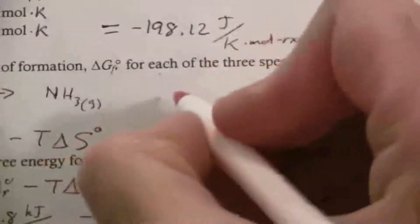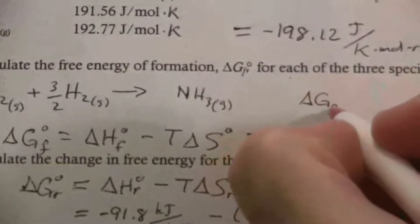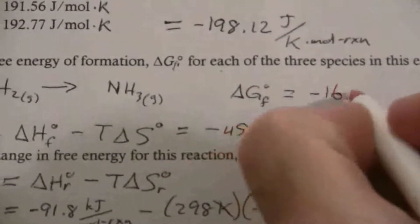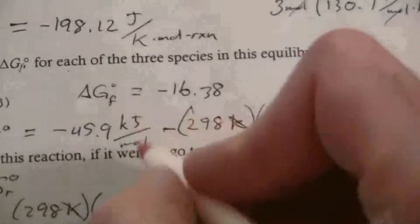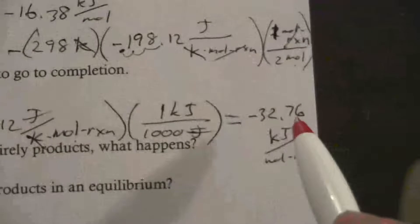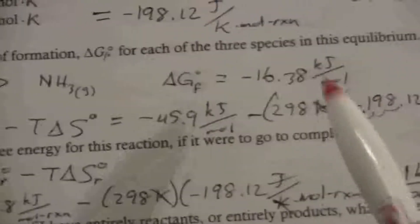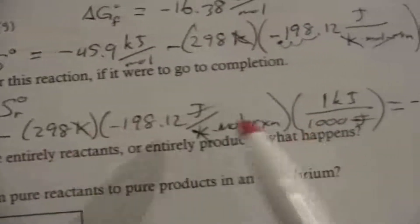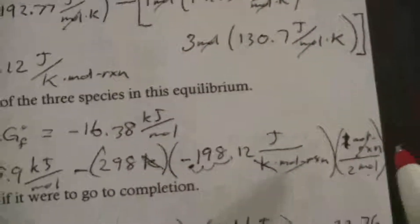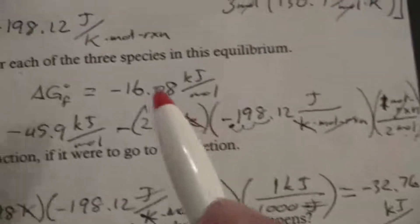So my delta G of formation for ammonia is negative 16.38, and that'll be kilojoules per mole of ammonia. You'll notice that's exactly half of what I calculated in this one. And the reason is because this is per mole of ammonia, whereas this one was per mole of this reaction up here. So that's why that one is twice as much, because this is producing twice as much ammonia, and so you would expect that.